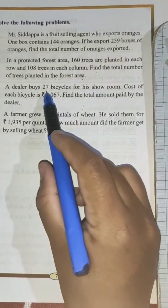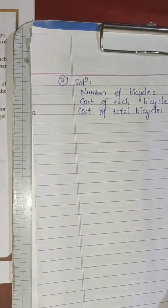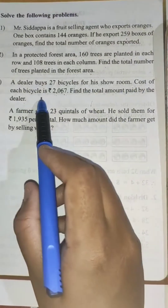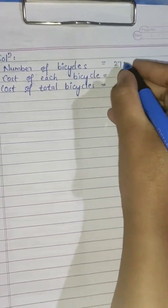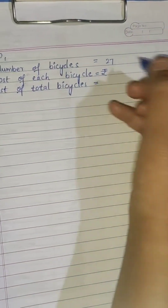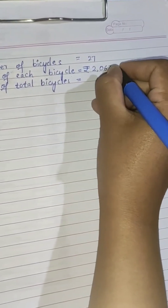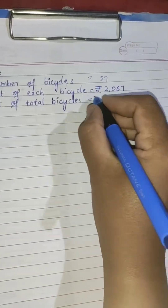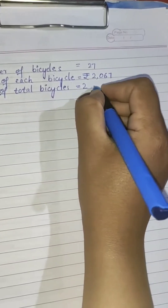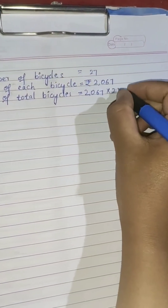The number of bicycles is 27. The cost of each bicycle is rupees 2,067. We have to find the total amount paid by the dealer — that is the cost of 27 bicycles total. So we calculate 2,067 into 27.